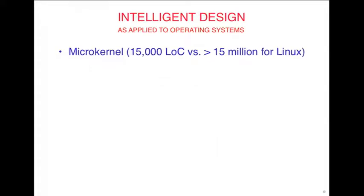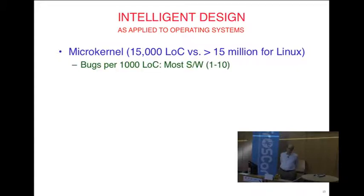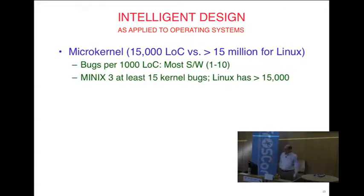Let me talk about intelligent design as applied to operating systems. Minix is a microkernel with about 15,000 lines of code — mostly C with a little assembly. Linux has 15 million lines, and Windows is probably above 100 million lines. Studies show one bug per 1,000 lines of code is about the best you can do with state-of-the-art techniques. If you've got 15 million or 100 million lines of code, you do the arithmetic. Minix has maybe 15 kernel bugs; Linux has 15,000; Windows has a million.